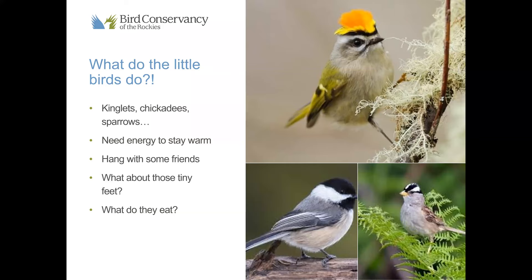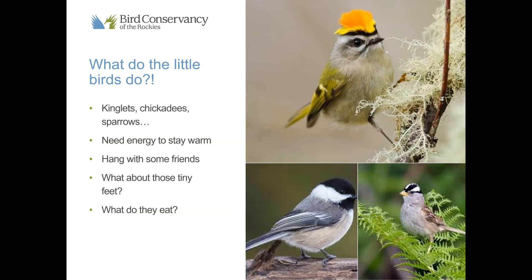White-crowned sparrows include subspecies we consider altitudinal migrants. Out here in Colorado, we have a subspecies that spends summer and spring up at high elevations — 10,000 to 14,000 feet — where they breed. Once temperatures start dropping in fall, they migrate down to lower elevations. So we can't always think of migration as north-to-south; it can also be from higher to lower elevations.